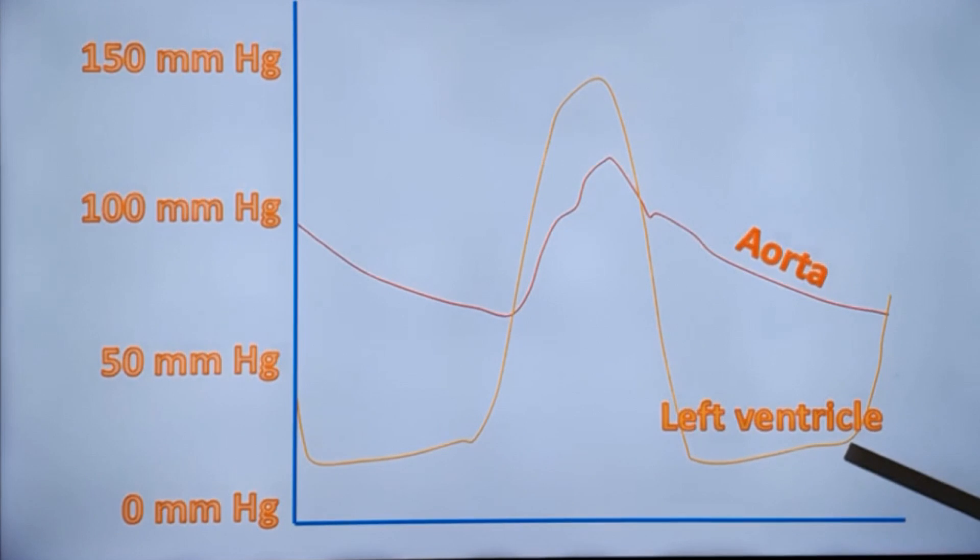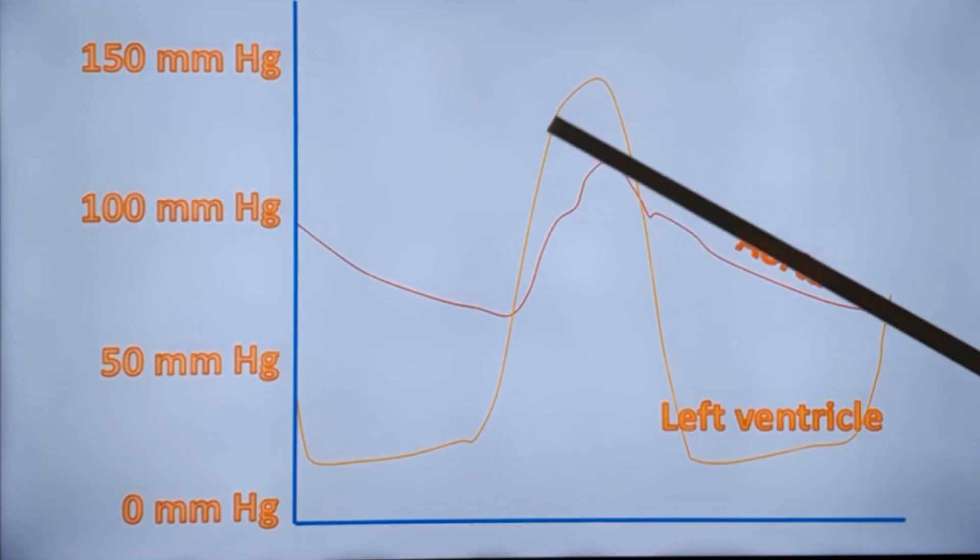This region will correspond to the left ventricular end-diastolic pressure. And this is the pressure crossover between the left ventricular and aortic pressure tracing.